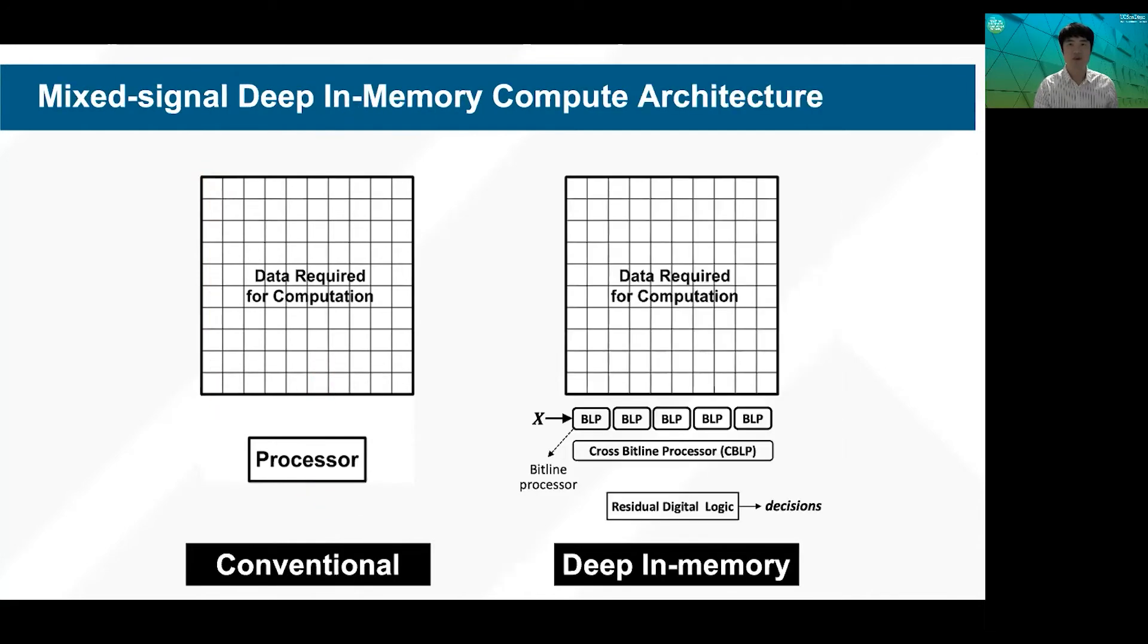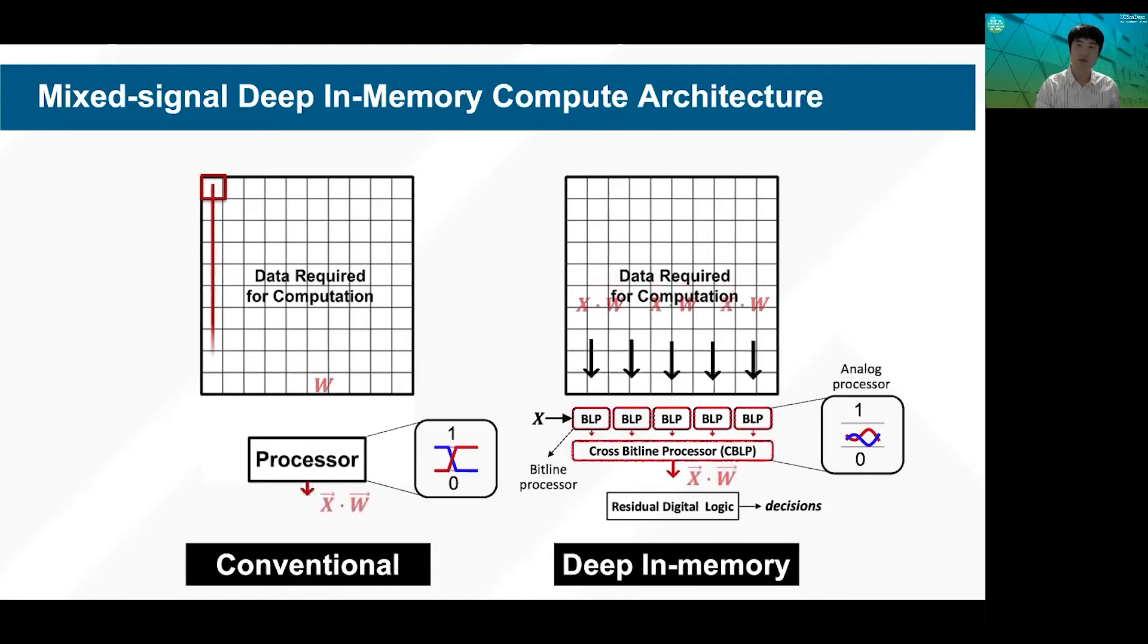To address the issue, we proposed deep-in-memory computing architecture, where the computation is processed at the moment of data access in the memory, in the analog domain with low voltage swing for energy efficiency.